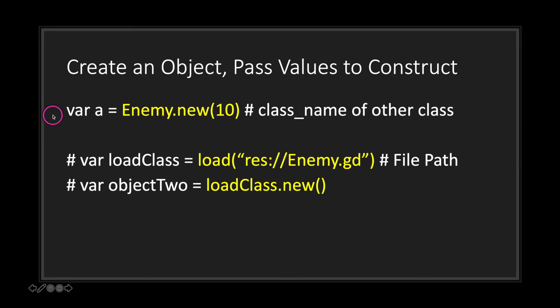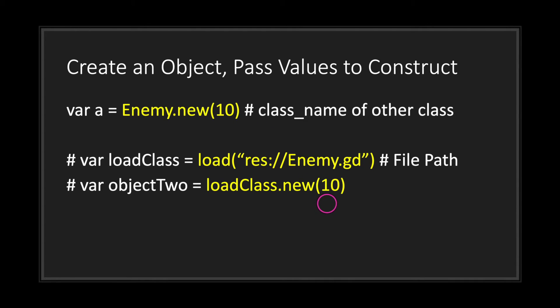To pass a value to your constructor method, use the new keyword and put your value inside the parentheses. If you have multiple parameters, separate each value with a comma. With file paths, you pass the value into your new method the same way — it's one line of code if you register your class name to the editor, and two lines if you use file paths.